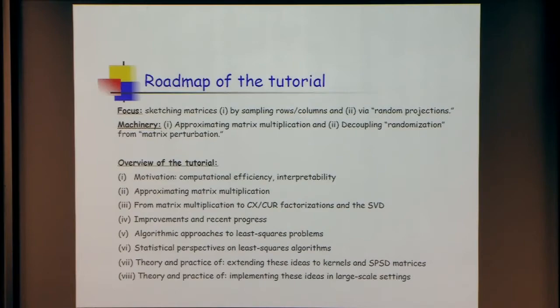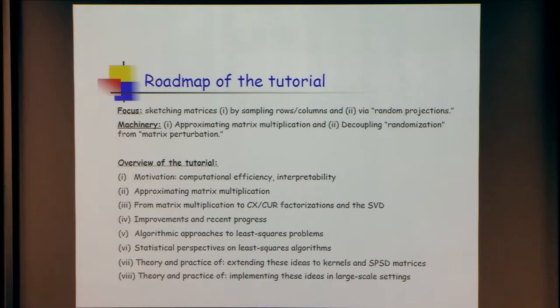I'll talk about L2 regression and have one slide summarizing L1 regression — the same ideas go through there. We can do least absolute deviations regression to moderate precision — three, four, five digits of precision on a terabyte of data. At a high level you use the same ideas Petros was talking about, but at a slightly lower level there are a lot of interesting practical and theoretical questions.